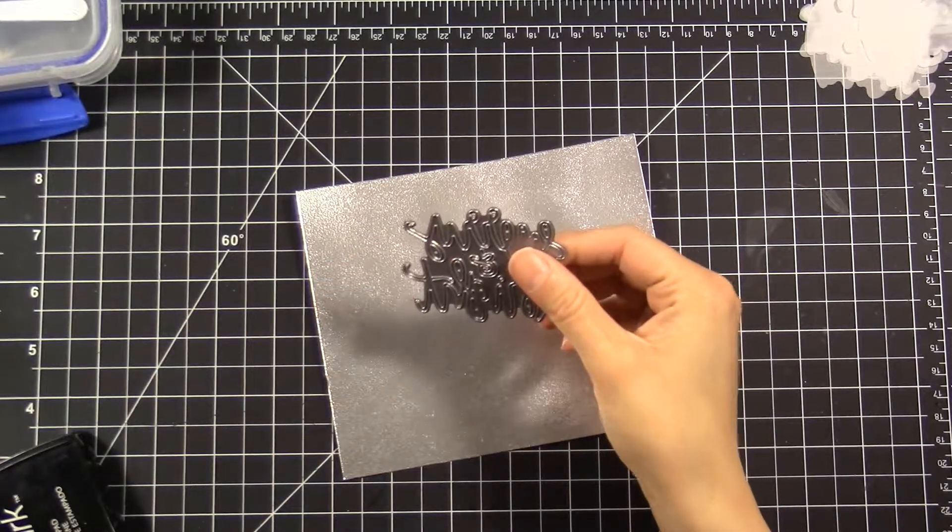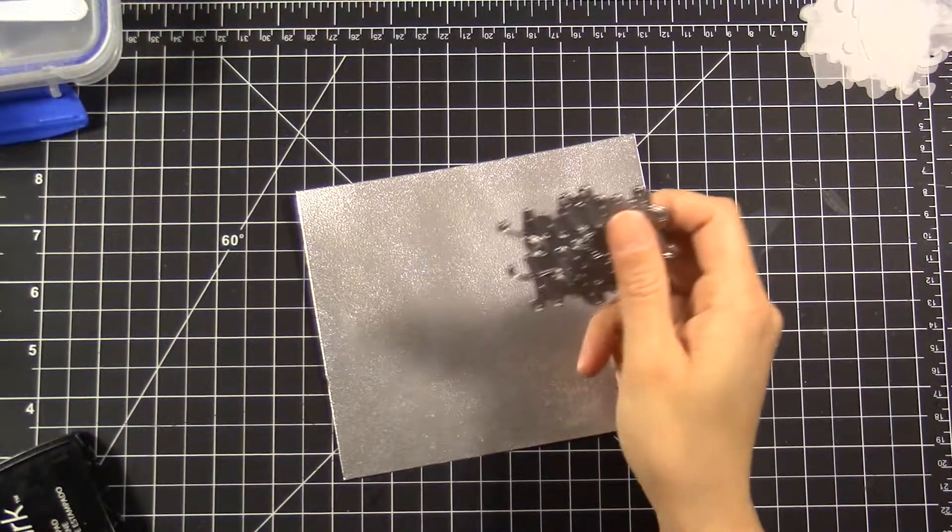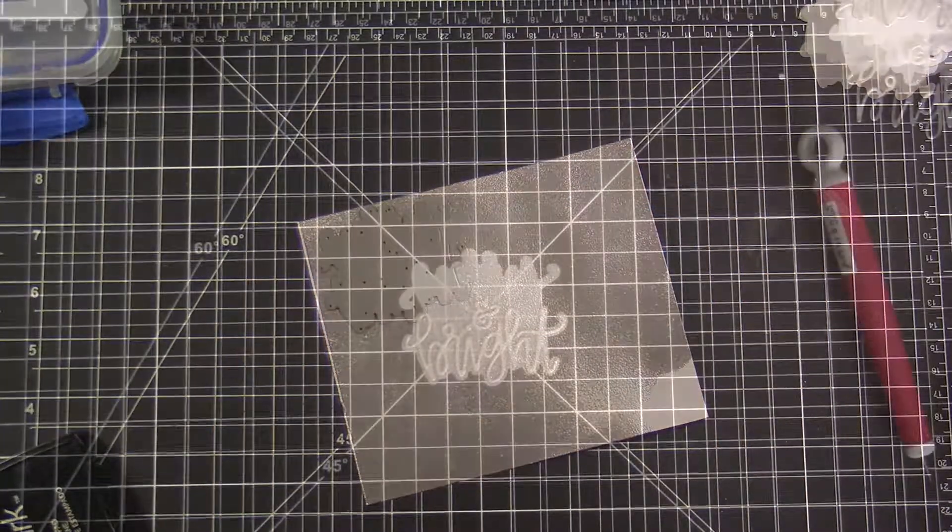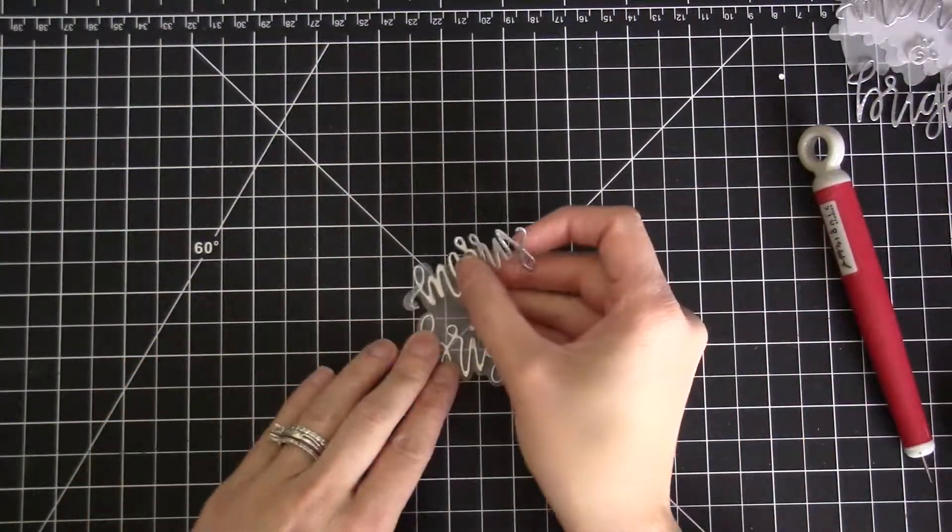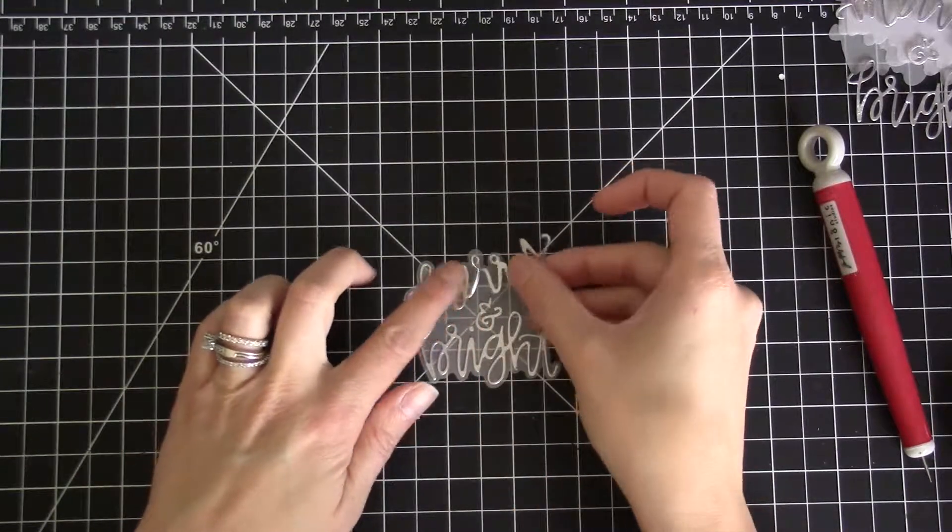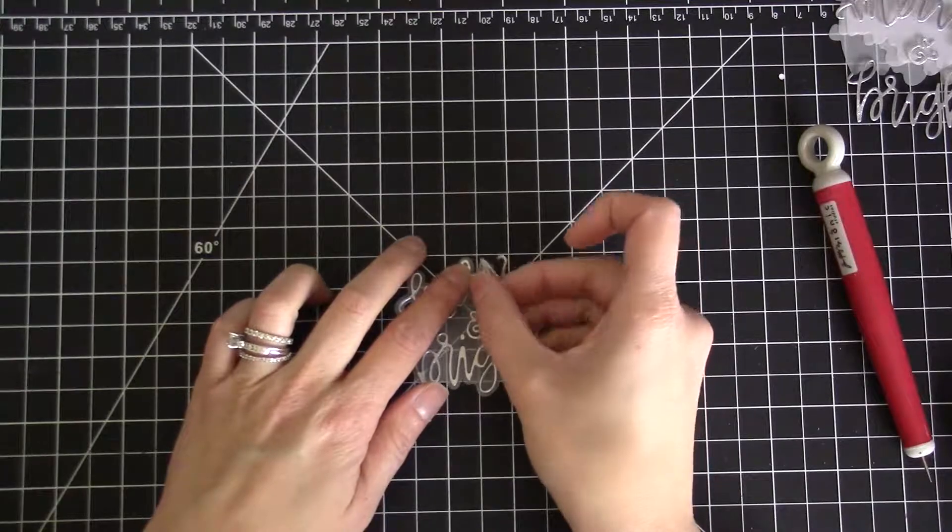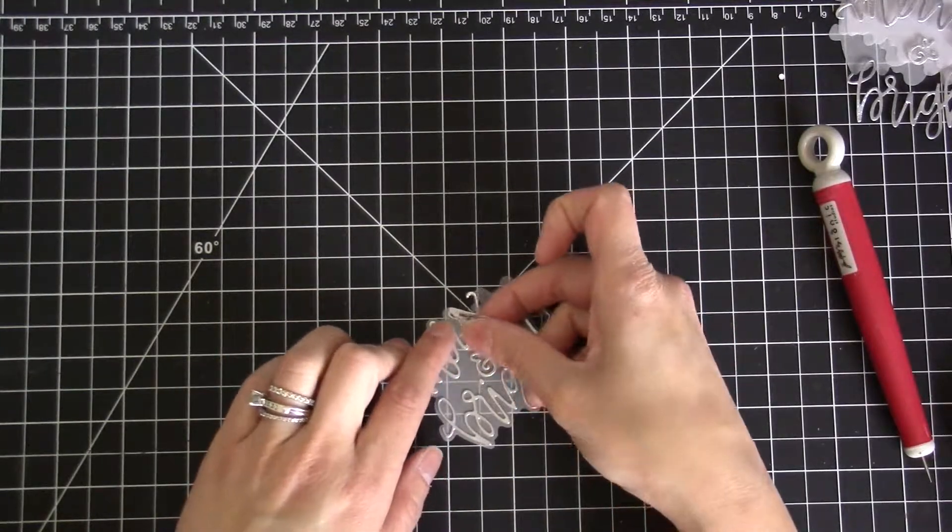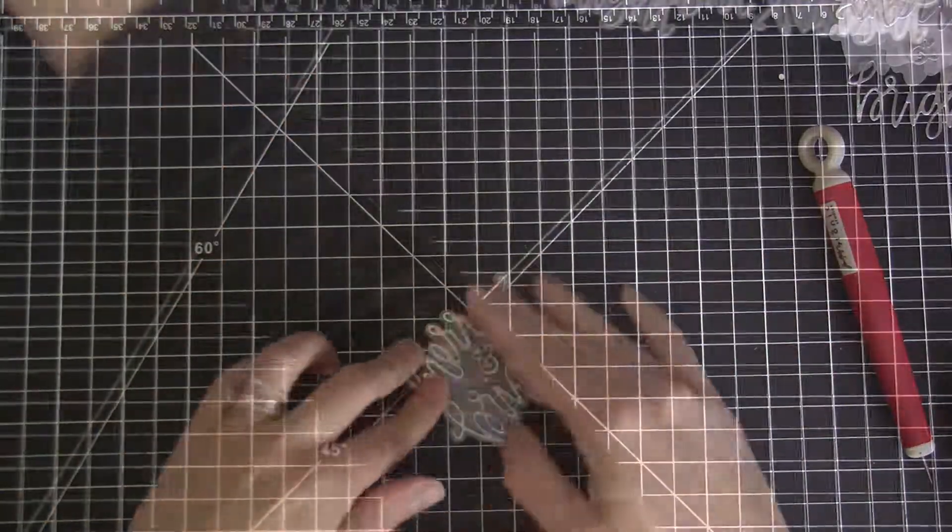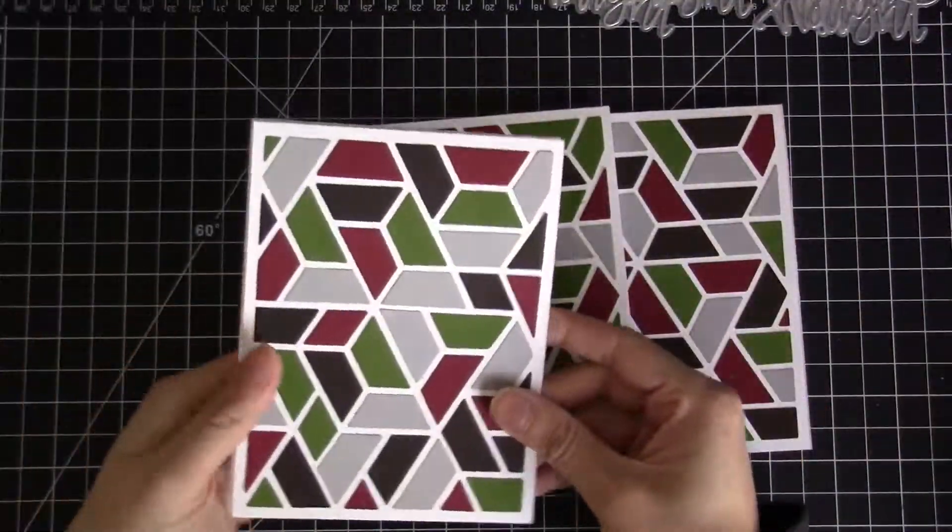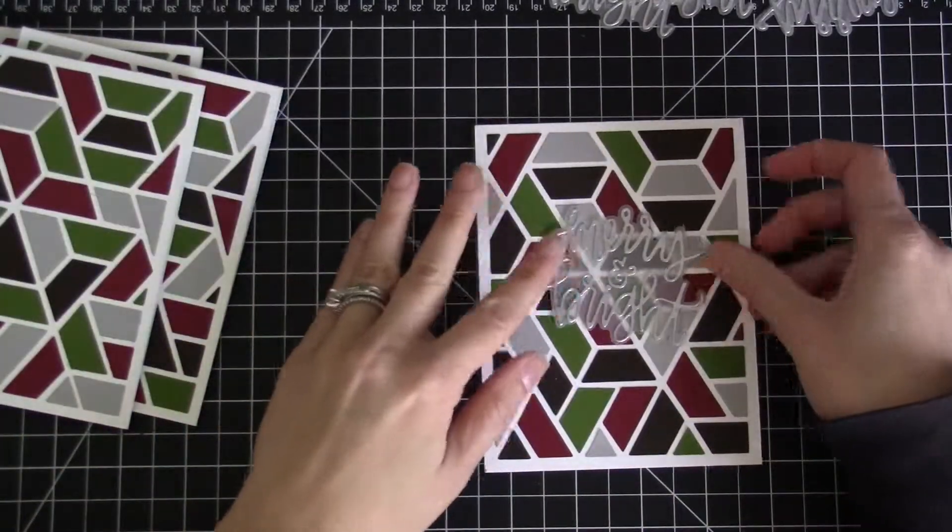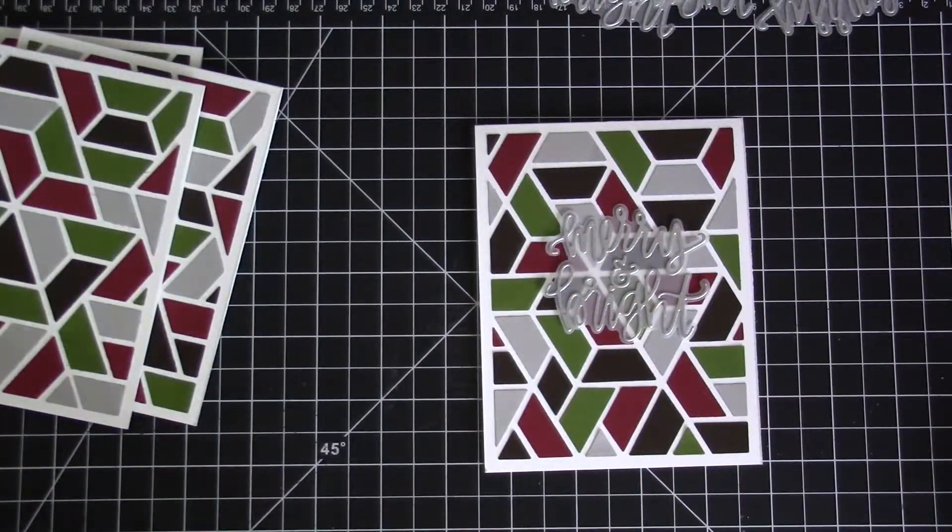This die set comes with the die that you see in my hand, which cuts out the words merry and bright. It also comes with the background die, which I've already cut a piece of vellum from. You'll see here that I'm attaching my sentiment onto that vellum background sheet. I did apply some sticky adhesive onto the back of the embossed cardstock because these are such intricate dies that I wanted to make it a little bit easier to apply.